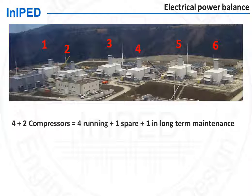This means four compressors are running, one is spare in hot standby, and one is available for long-term maintenance. What shall be the maximum power consumption considered for the compressors? It is not six times the consumption of one compressor, nor four times. Indeed, when one compressor has to be taken out of service for maintenance, to ensure that the plant duty is still met, operations need to put a fifth compressor online before the compressor is taken out for maintenance.